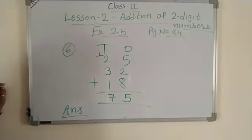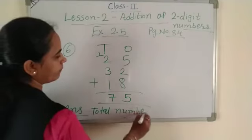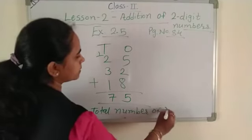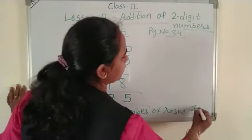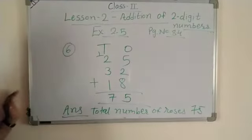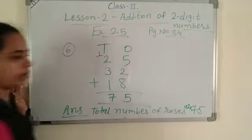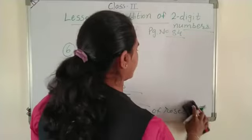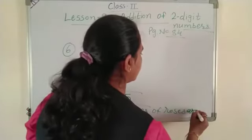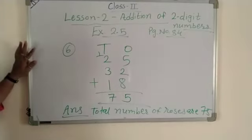Write the answer: total number of roses, how many? Total number of roses are 75. This is number 6.